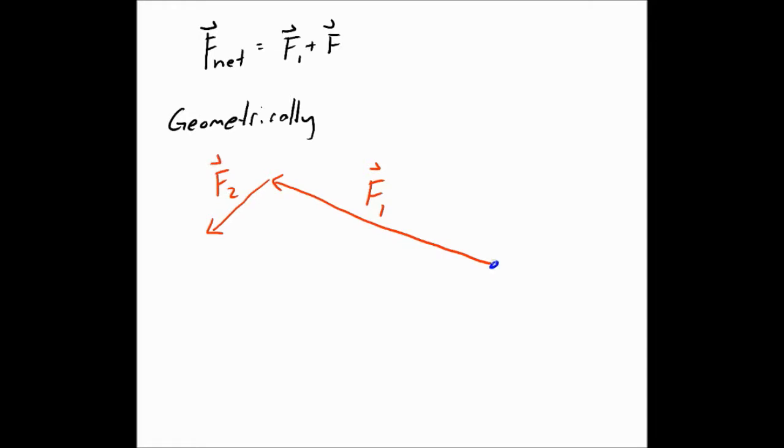So we started here, and we finished here. So the net, or the addition of these two vectors, goes from the initial spot to the final spot. Okay, so there's the geometric method. So our results should look like that.